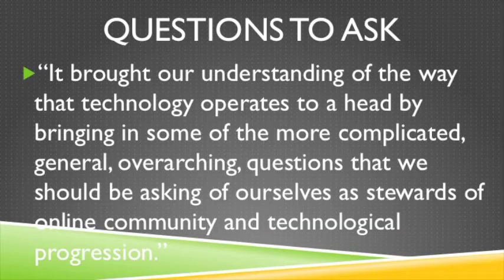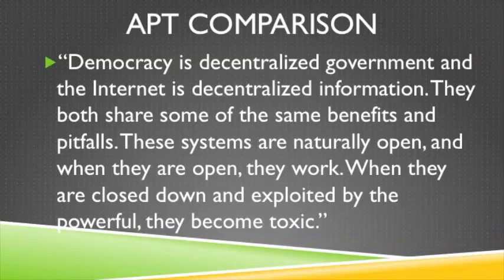That's how we need to regulate it as we approach things like net neutrality. A lot of you brought up interesting questions about how we integrate technology into journalism. One student brought our understanding to a head by raising the overarching questions we should be asking of ourselves as stewards of online community and technological progression. But what really are the questions we need to ask about technology in journalism to truly empower people? Another student wrote: democracy is decentralized government and the internet is decentralized information — they both share some of the same benefits and pitfalls. These systems are naturally open and when they are open, they work. When they are closed down and exploited by the powerful, they become toxic. I thought this comparison between government and internet is a great answer — how do we make it more open? There are lots of lessons learned from democracy that we can apply to the internet.